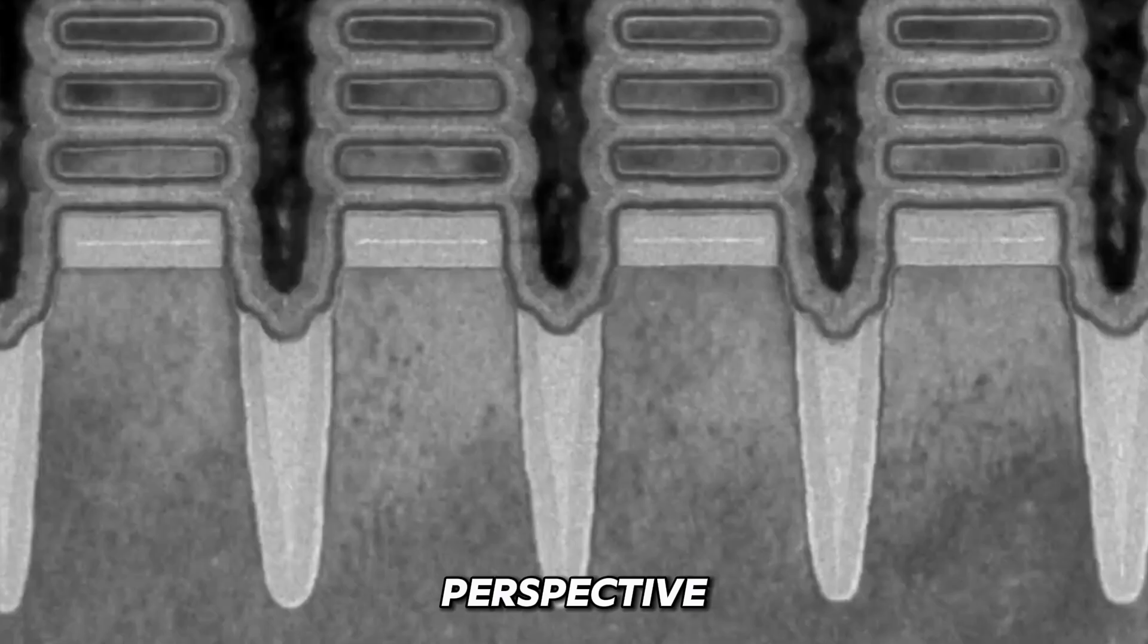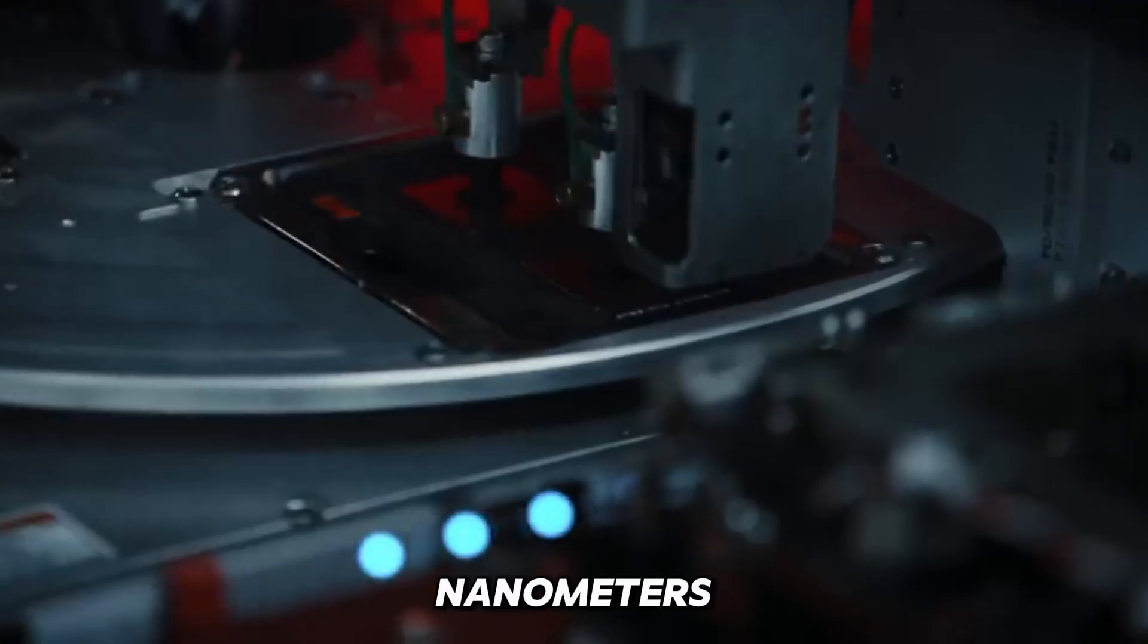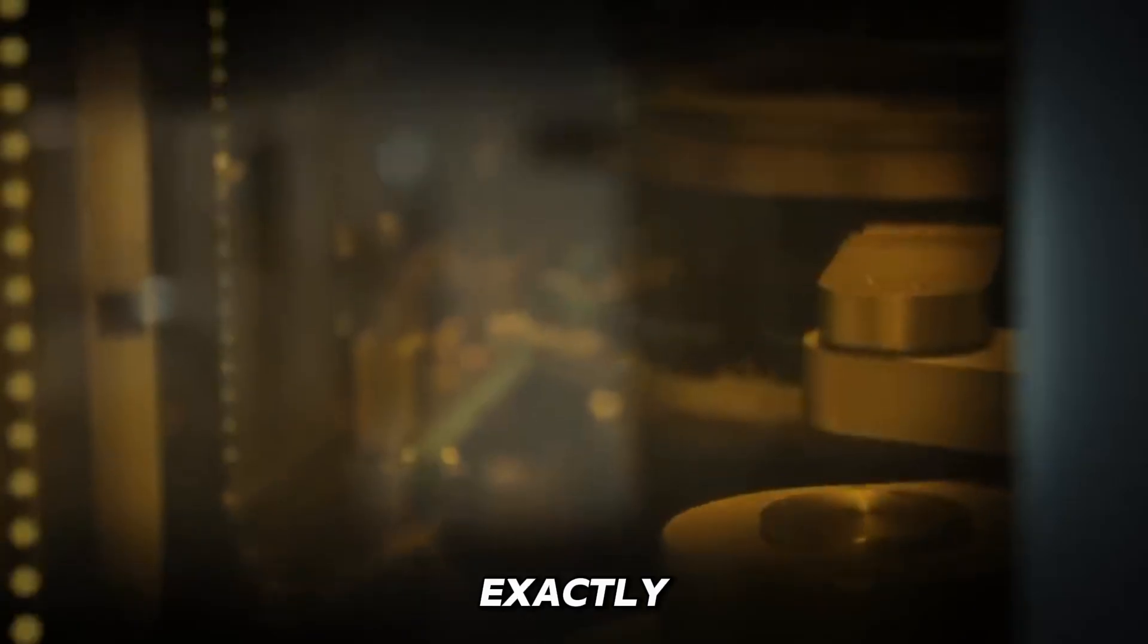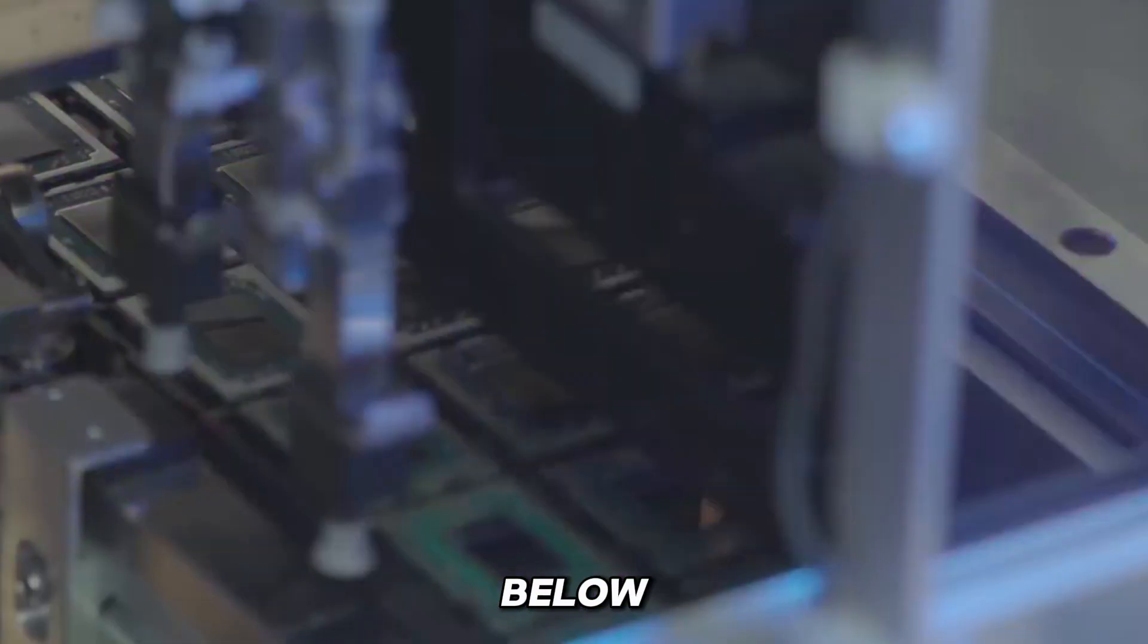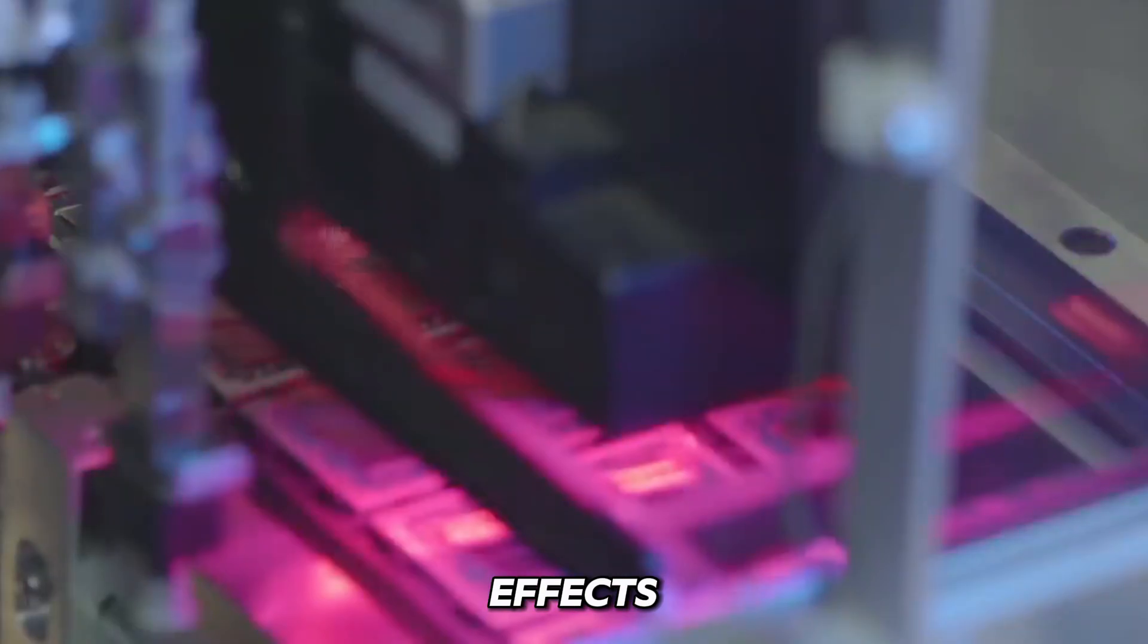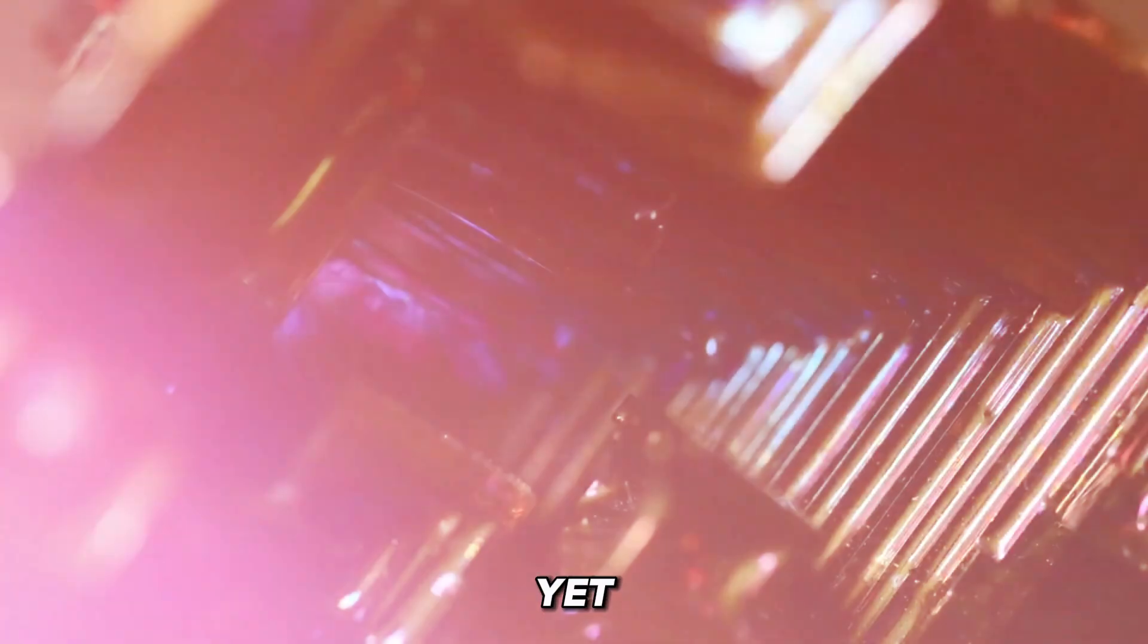To put it in perspective, some parts of the transistor are only 0.5 nanometers thick. And this is exactly where silicon breaks down. Because below 3 nanometers, quantum effects disrupt everything. Yet with bismuth, those barriers seem to vanish.